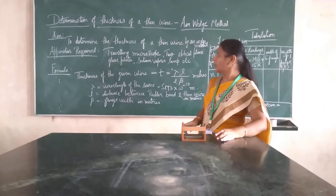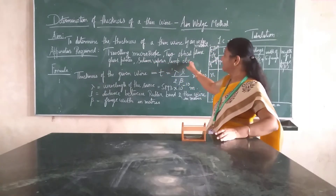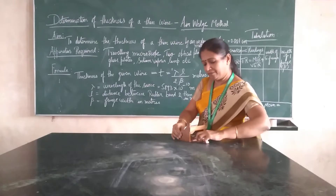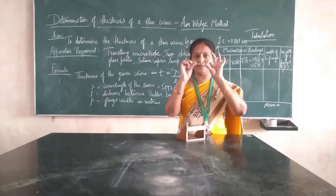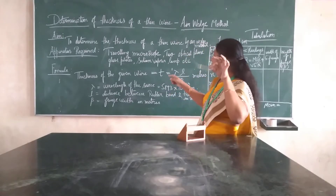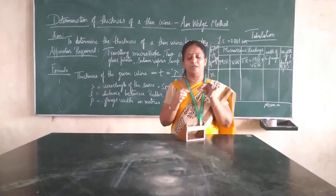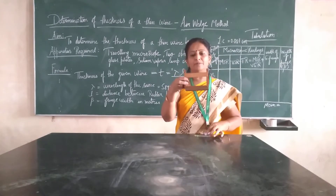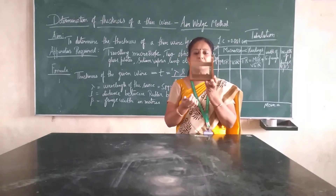The apparatus required for the same is a traveling microscope and two optical plane glass plates. Let me show you — these are the two optical plane glass plates. We also have a sodium vapor lamp which is used as a source; it spreads yellow light. And we have a wooden stand which has got one more glass plate inclined at an angle of 45 degrees.